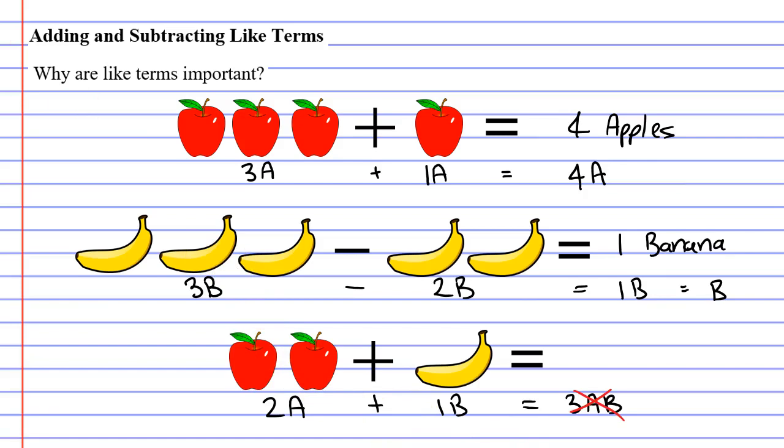And when you look at the picture, you can see it's really obvious, because if I add 2 apples to 1 banana, I don't have 3 apple bananas. That just makes no sense. All I have are 2 apples plus 1 banana. I can't combine these together. So how does this relate to like terms?